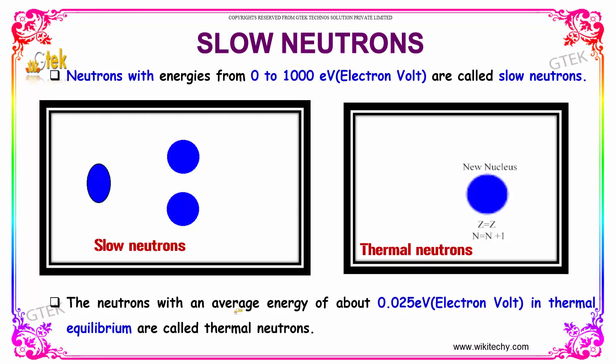Neutrons with an average energy of about 0.025 eV in thermal equilibrium are called thermal neutrons.